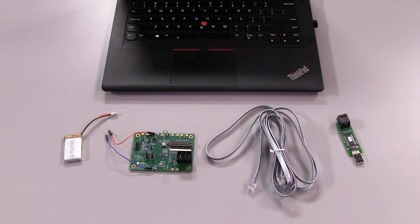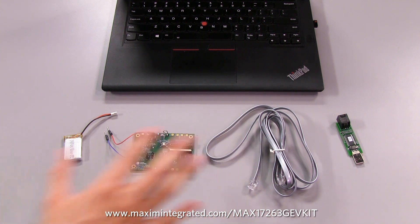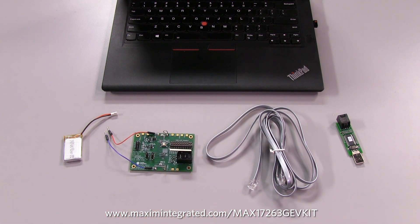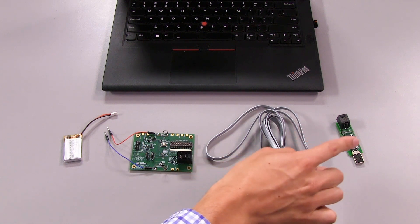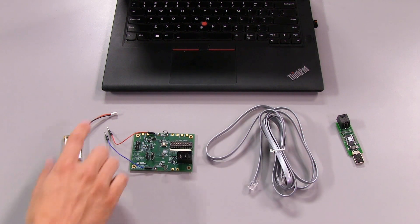Now that I've gone over the basics, I'll use the MAX17263 evaluation kit to demonstrate the various features and explain them as I go. For this demo, I'll be using the evaluation board with its included RJ11 cable and USB adapter, a lithium battery, and my PC.